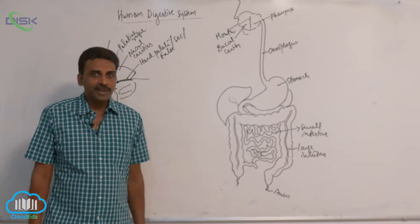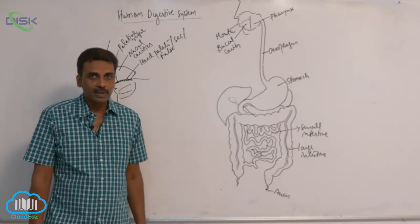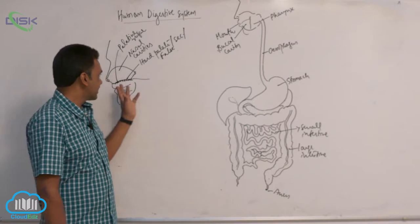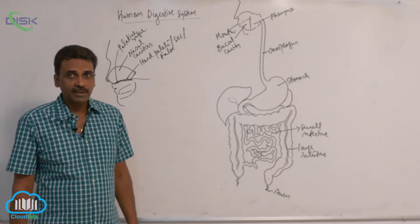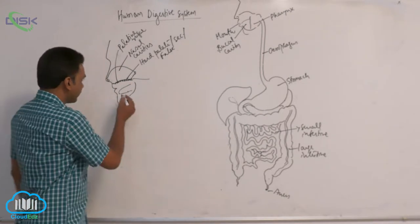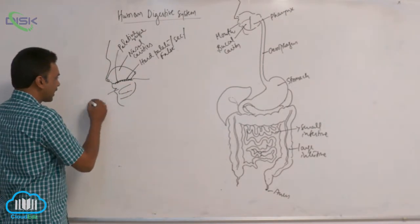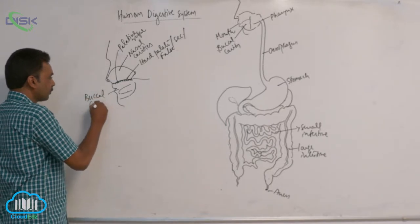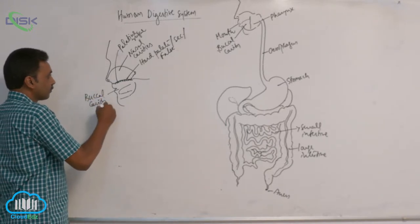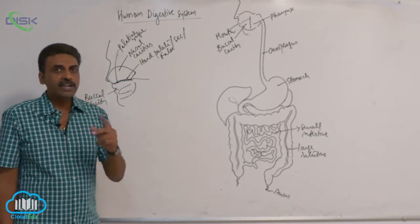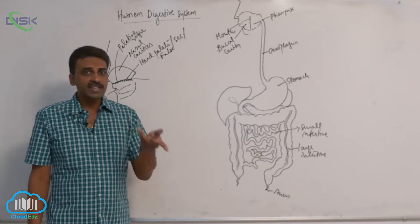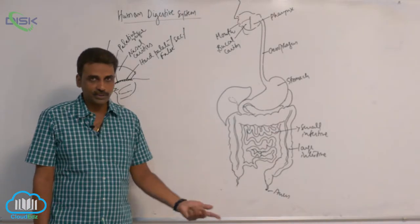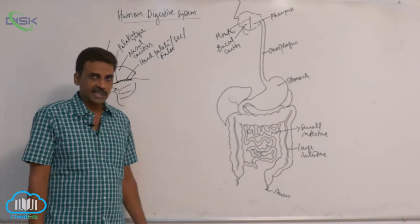In case of human beings, we are discussing the buccal cavity. The buccal cavity contains tongue as well as teeth. We saw the structure of the tooth and we saw the structure of the tongue as well.